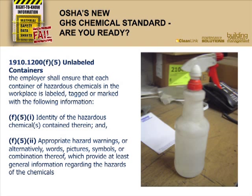Most of us are doing a good job of that, but we're forgetting the next part: we've got to put the hazard warning underneath the name. A hazard warning might be 'harmful if swallowed,' 'flammable,' 'irritant,' those types of things. We can use words like 'flammable,' or we can use pictures or symbols like a skull and crossbones or the NFPA diamond system. Those are all fine ways to communicate to employees.